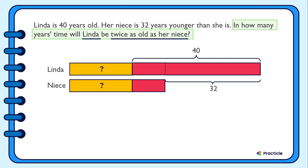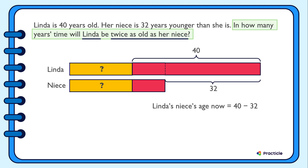Let's think about what we can tell from our model. This is Linda's age after this number of years have passed, and this is how old Linda's niece is going to be after the same number of years. We know that this whole bar represents twice the number of years as this bar. Let's simplify this model by finding out how old Linda's niece is now. We know that Linda is 40 years old now, and her niece is 32 years younger. Let's subtract 32 from 40: 40 minus 32 equals 8. Now after some number of years, Linda's niece's age can be represented by this part and 8.